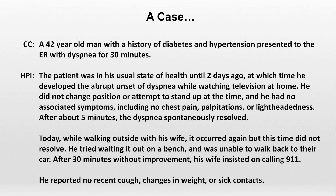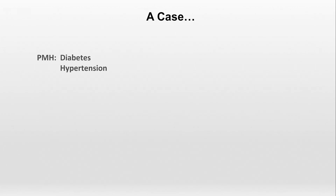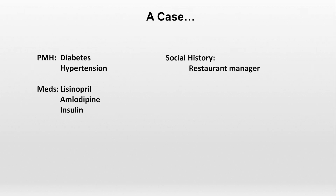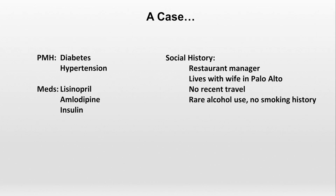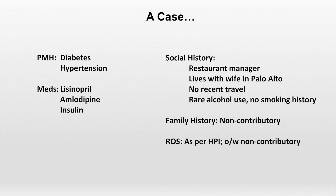He reported no recent cough, changes of weight, or sick contacts. His past medical history is notable for diabetes and hypertension, as mentioned. Medications include lisinopril, amlodipine, and insulin. He works as a restaurant manager and lives with his wife in Palo Alto. He has no recent travel, rare alcohol use, and no smoking history. His family medical history is non-contributory, and his review of systems is also non-contributory other than what was already mentioned.